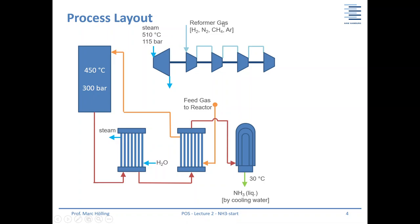Fresh make-up gas comes from a steam reformer at the top. Steam and methane are used to produce hydrogen; nitrogen is also needed for ammonia production, along with small amounts of methane and argon. This gas is compressed in stages — normally to a certain pressure level with cooling in between for efficiency and to avoid very high temperatures that would require expensive materials. Four compressors are powered by a steam turbine at 510 degrees Celsius and 115 bars.